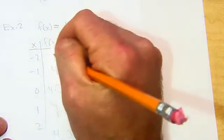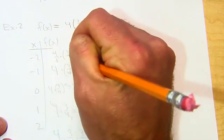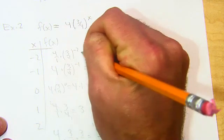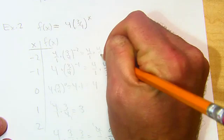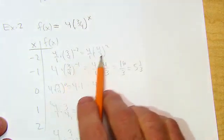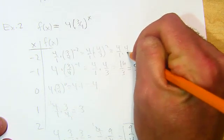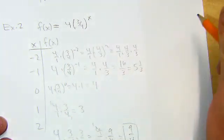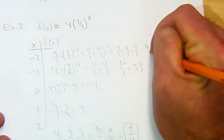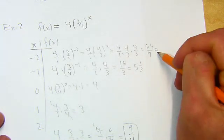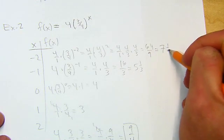And then this last one, 4 over 1 is going to be times 3 fourths to the negative 2. That's going to be 4 over 1 times 4 thirds squared. Flip that, make that positive 2. So we're talking 4 over 1 times 4 thirds times 4 thirds. So what, 16 times 4, 64 over 9, which is, man, 9 times 7, 7 and a ninth, I believe.